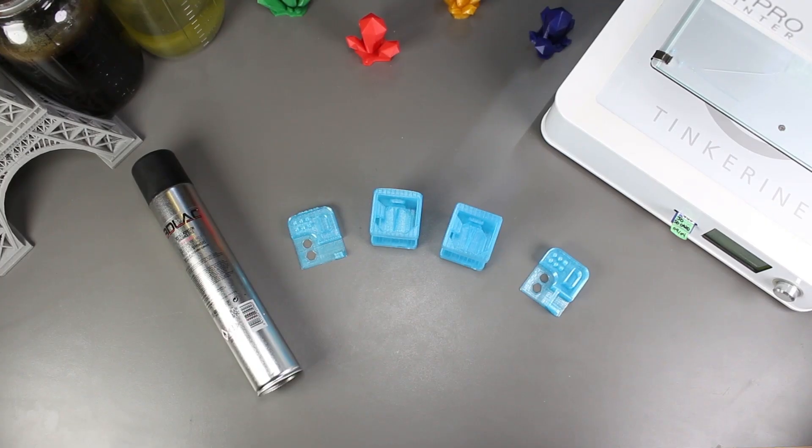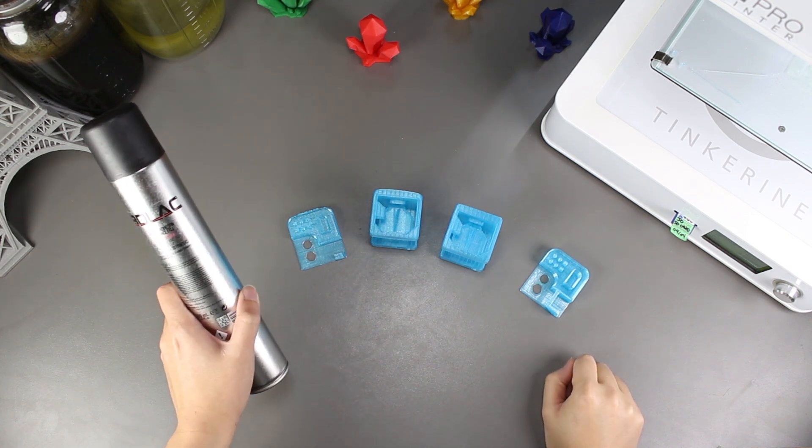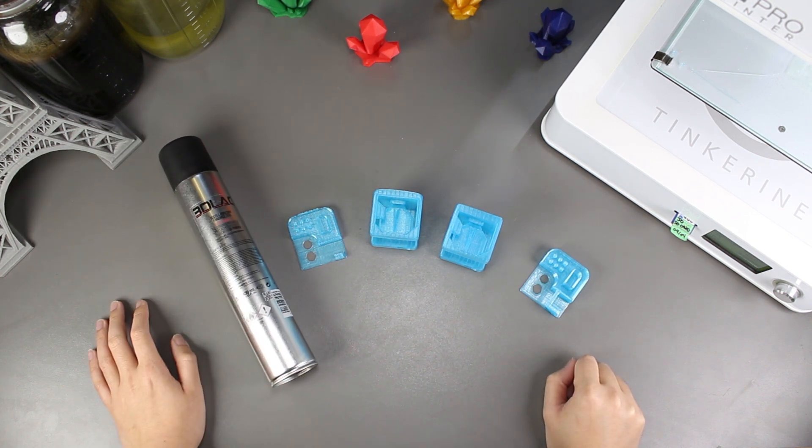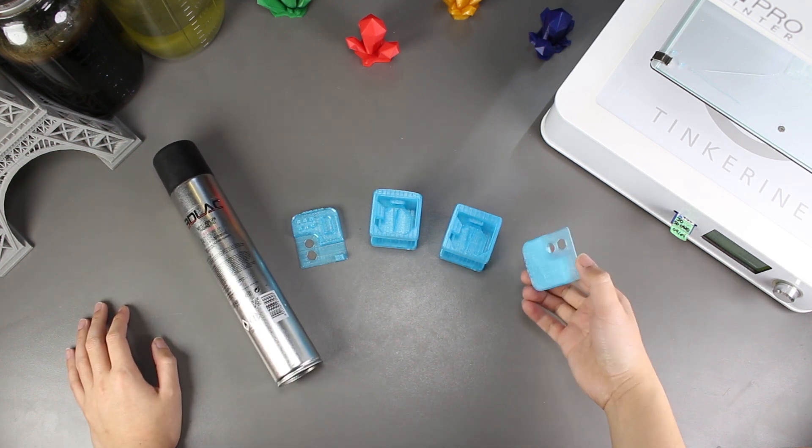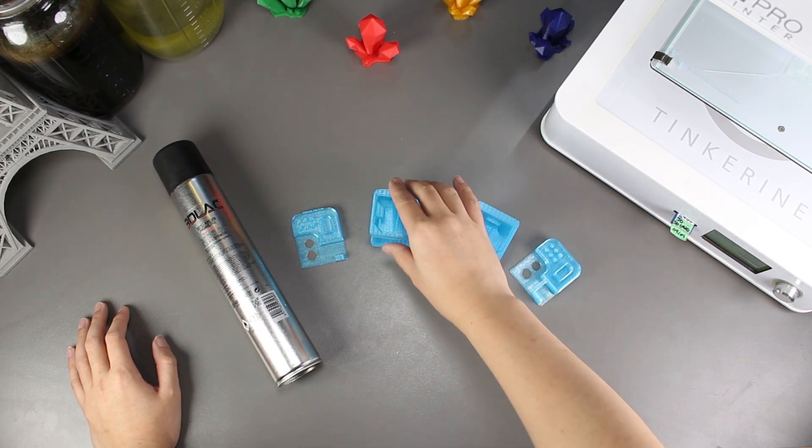Well, there we have it. We tried using 3D LAC as a bed adhesive and it actually works pretty well. It's easy to apply and wash off. The PLA sticks really well to it too. It looks like a pretty good alternative bed adhesive.